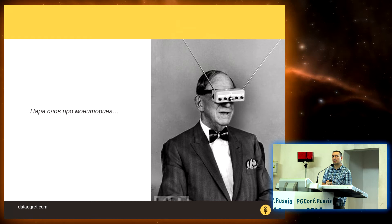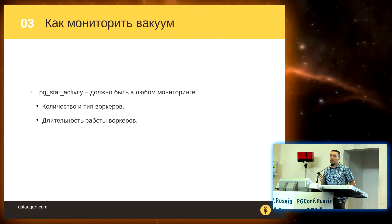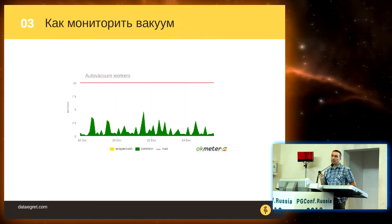Now, a few words about monitoring. There are two areas in vacuum where you can see what is going on. First, pg_stat_activity — any monitoring system should show data from this particular view because it shows the status of the vacuum, how many vacuums are running currently, whether there are any blockings, and the age. This is how the classical monitoring graph looks: we have information about the number of workers, the wraparound workers, and the highest limit. We can see whether we are hitting the threshold for the number of workers.